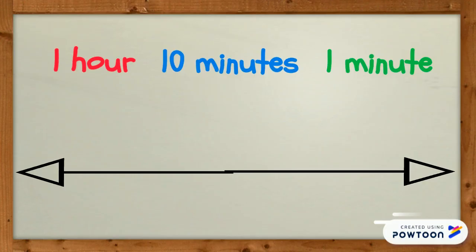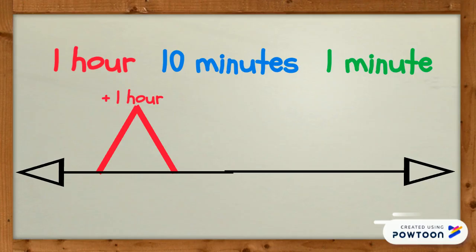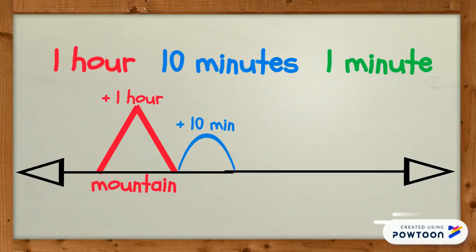Hours are a long amount of time, so their spaces on the number line will be the biggest. When an hour passes by, we will draw and label a big pointy jump and call that a mountain. Ten minutes is shorter than an hour, so this jump will take up less space on the number line. When ten minutes pass by, we will draw a medium-sized rounded jump and call it a hill.